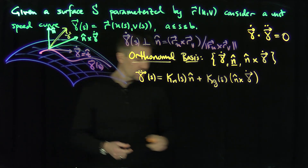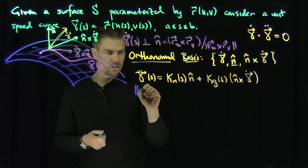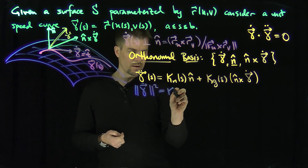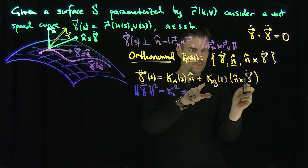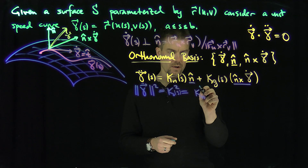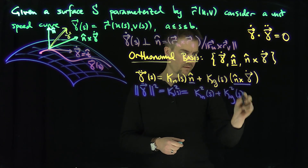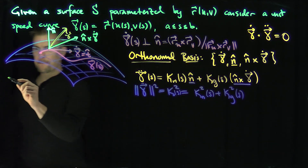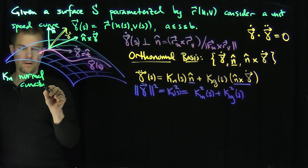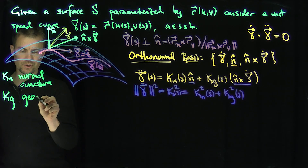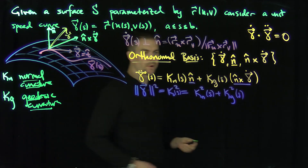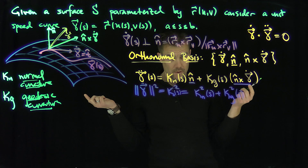One immediate consequence: taking the norm squared of gamma double dot, by definition that's the curvature squared. By the Pythagorean theorem, since those components are perpendicular to each other, the curvature squared equals K_N of S squared plus K_G of S squared. Here K_N is the normal curvature, and K_G is the geodesic curvature. In particular, we see that if these curvatures vanish, that forces the curve to be planar.